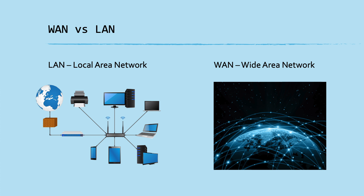There are two types of networks: a wide area network and a local area network. When you take your phone and connect it to your Wi-Fi, that is a local area network — it's local and everything inside can talk to each other. The wide area network is a bigger network, generally the internet as we know it. Anything local inside your home or a business is a local area network.